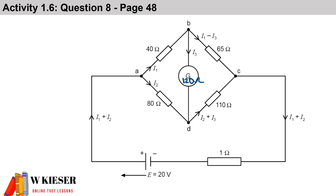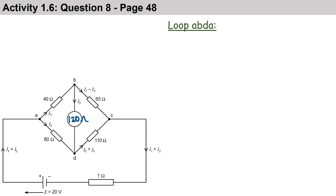In this calculation we have a balanced Wheatstone bridge with a galvanometer reading 120 ohms, and we need to solve for the current through each branch. Let's take a look at the different equations.